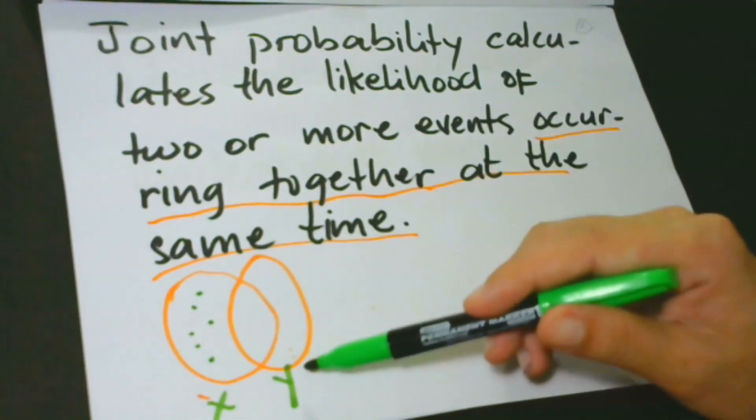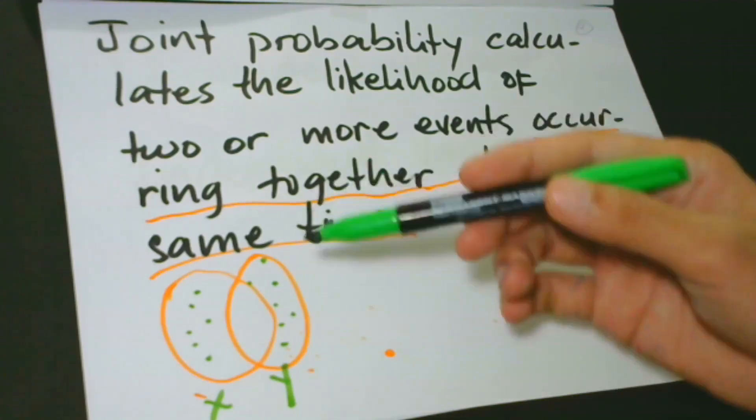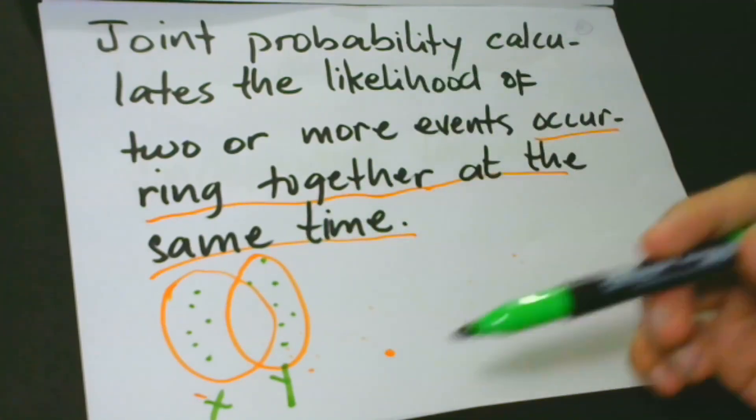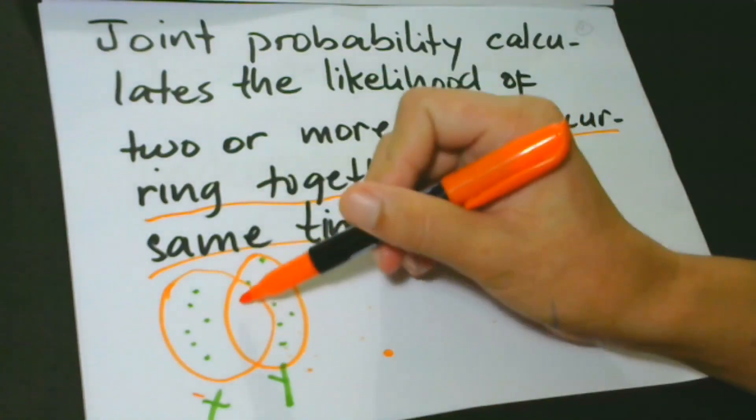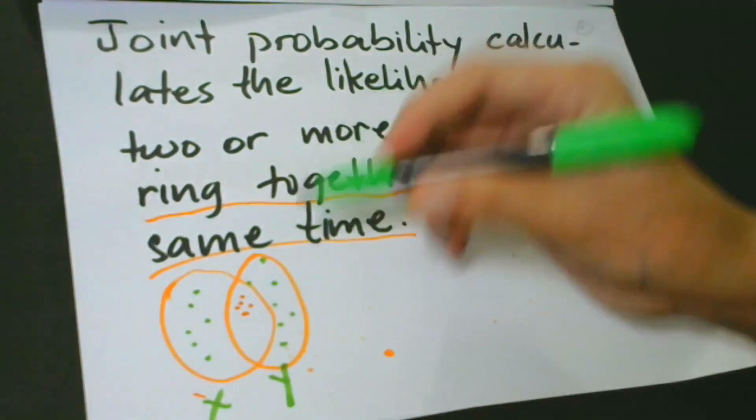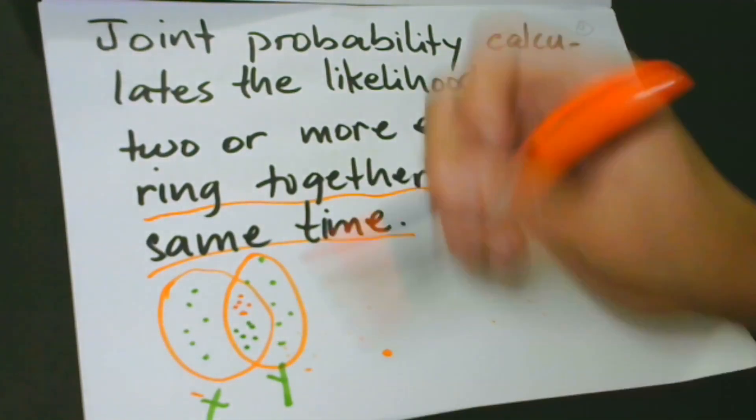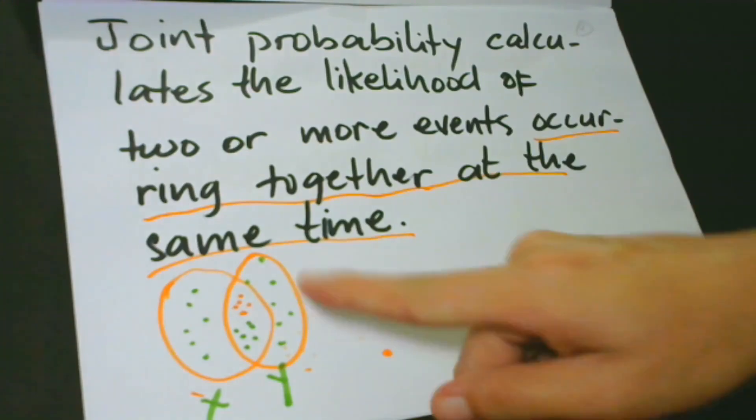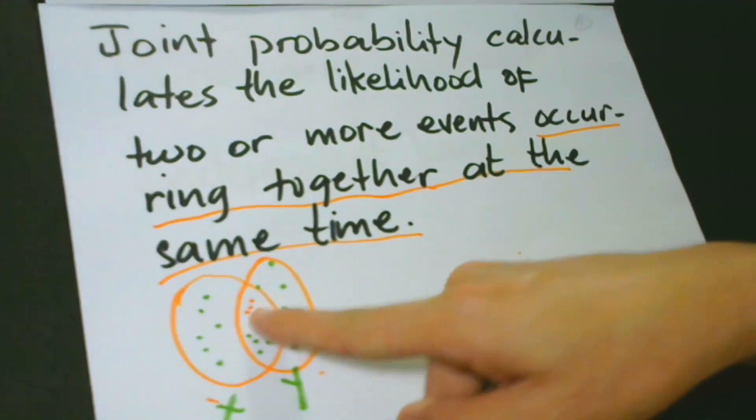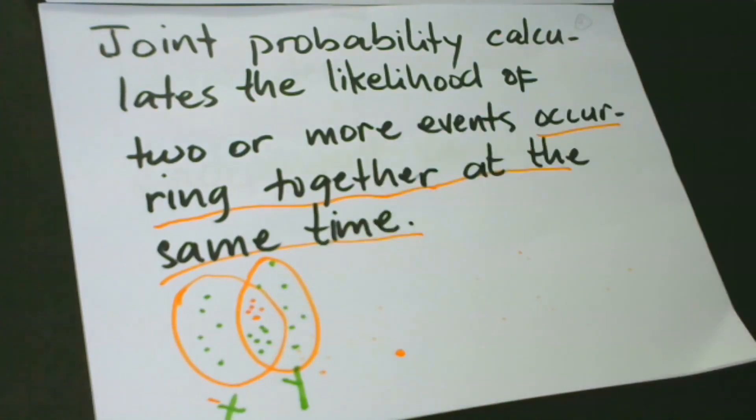We are concerned with the points of intersection, meaning the values of both X and Y that may occur at the same time. For example, you have so many values for X and values of Y. What we are interested in are those values that intersect X and Y. These values here are the events that occur together at the same time. And this is what we are concerned much.